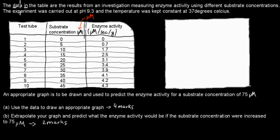The question says: The data in the table are results from an investigation measuring enzyme activity using different substrate concentrations. The experiment was carried out at a pH of 9.3, and the temperature was kept constant at 37 degrees Celsius. This is our table - test tubes here, substrate concentration down here, and enzyme activity here. The units are micromolar (μM), and the enzyme activity unit is micromolar per second per gram (μM/sec/g). You need to know those as well.